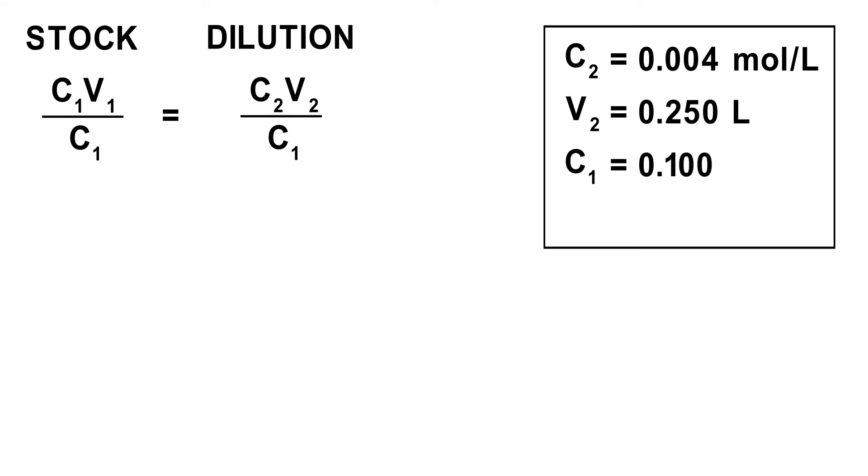Our stock solution has a concentration of 0.100 moles per litre C1. The volume of stock V1 is our unknown quantity. To find the volume of stock required, we will isolate V1 in our equation by dividing both sides by C1. Therefore, V1 is equal to C2 times V2 divided by C1.